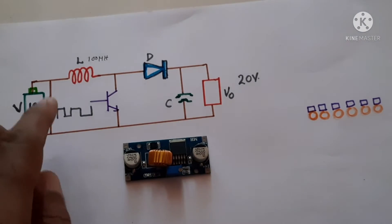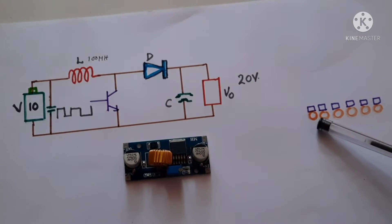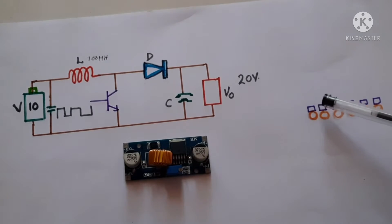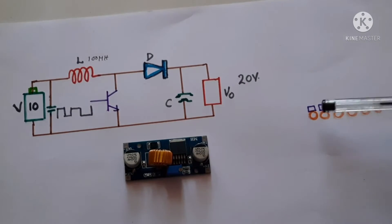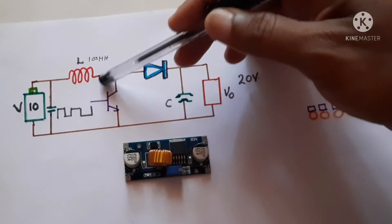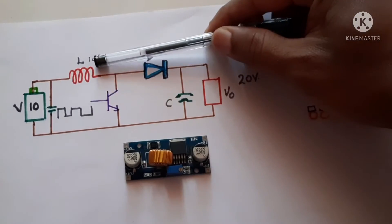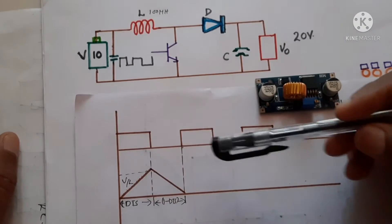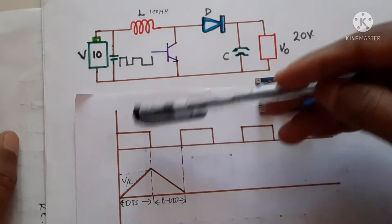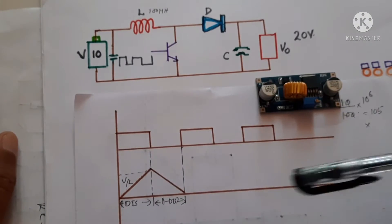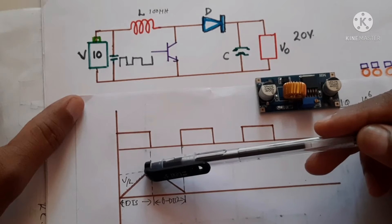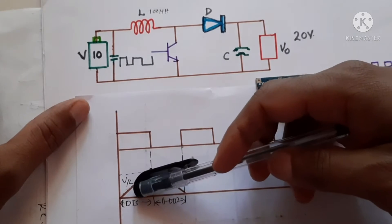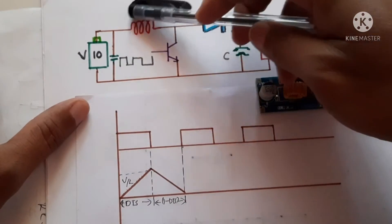When the current is flowing, the voltage is 10 volts. Current means the flow of electrons. These electrons carry only 10 volts. When this current passes through the inductor, the inductor takes energy from these electrons and stores it. As the inductor value increases, it takes more energy. Looking at this plot, when the transistor is on, current flows through this inductor. The inductor current will not reach a maximum value immediately — the inductor energy increases slowly and the magnetic field is also created slowly.